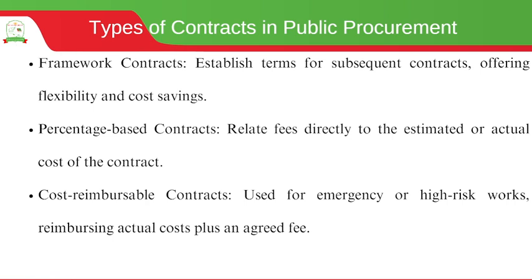Other types include framework contracts, which establish terms for subsequent contracts geared towards offering flexibility and cost savings. They are also called umbrella agreements or master agreements. The key purpose is to establish terms and conditions for future transactions. Examples include government contracts that establish agreements with suppliers for provision of goods and services over a set period of time.